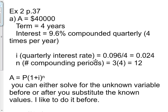i is the quarterly interest rate. You take 0.096 and divide it by 4 because there are 4 quarters in a year and you get 0.024. n is the number of compounding periods which is 3 times 4 years equals 12. That's the number of compounding periods.